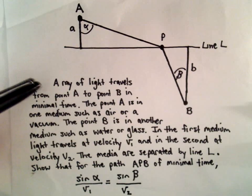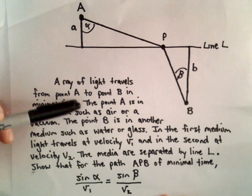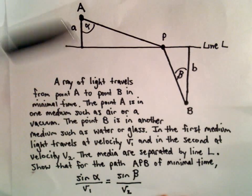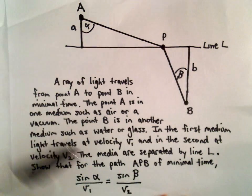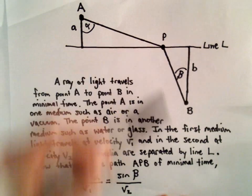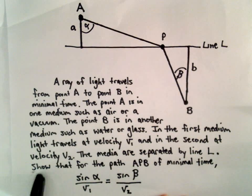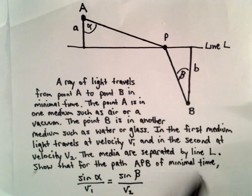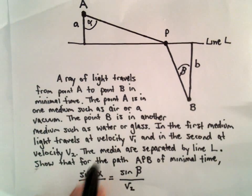Here's the problem. We've got a ray of light that travels from a point A to a point B in minimal time. The point A is in one medium — so maybe this is, for example, in the air or in a vacuum — and the point B is in another medium, such as water or maybe glass. In the first medium, the light travels at a velocity V sub 1, and in the second medium, it travels at a velocity V sub 2.